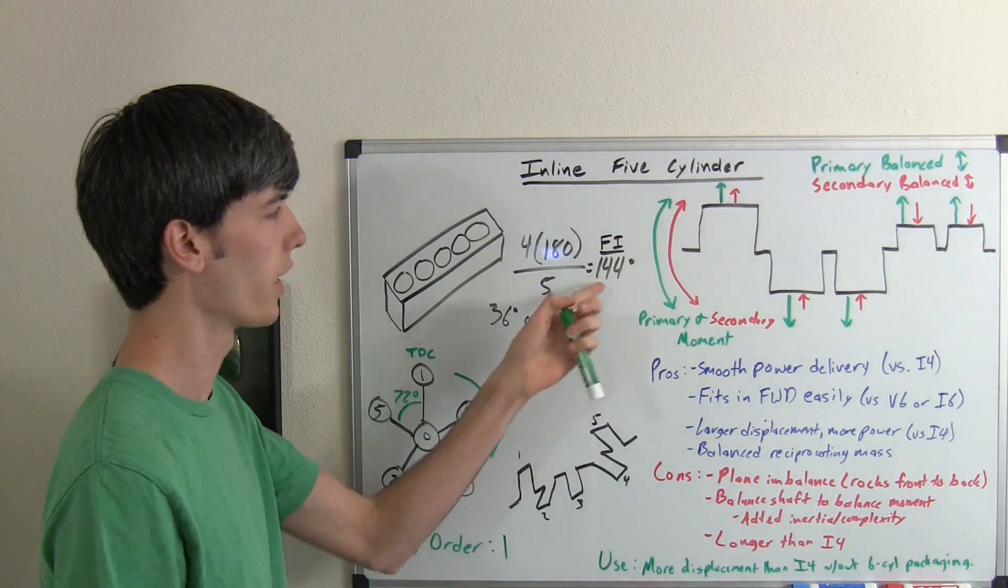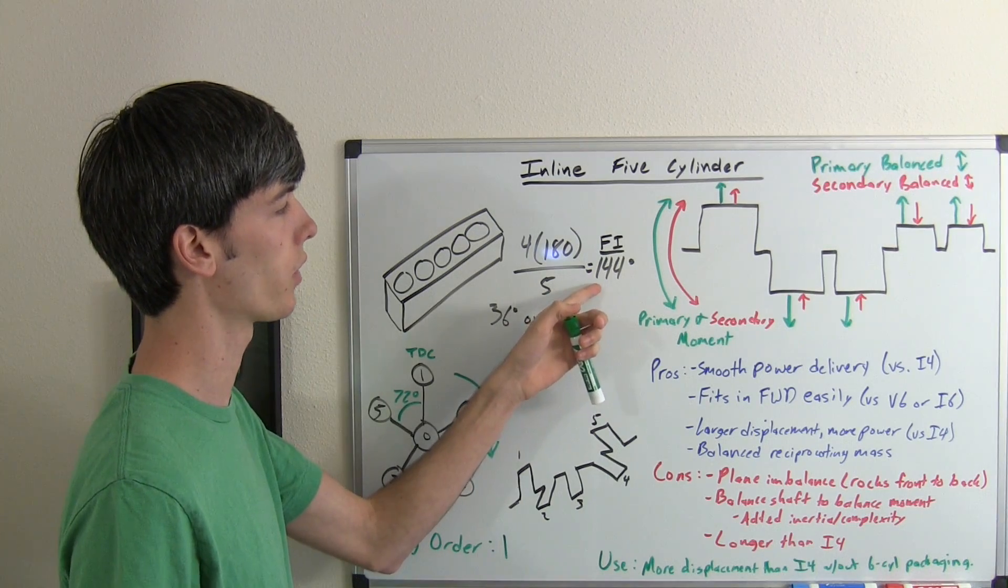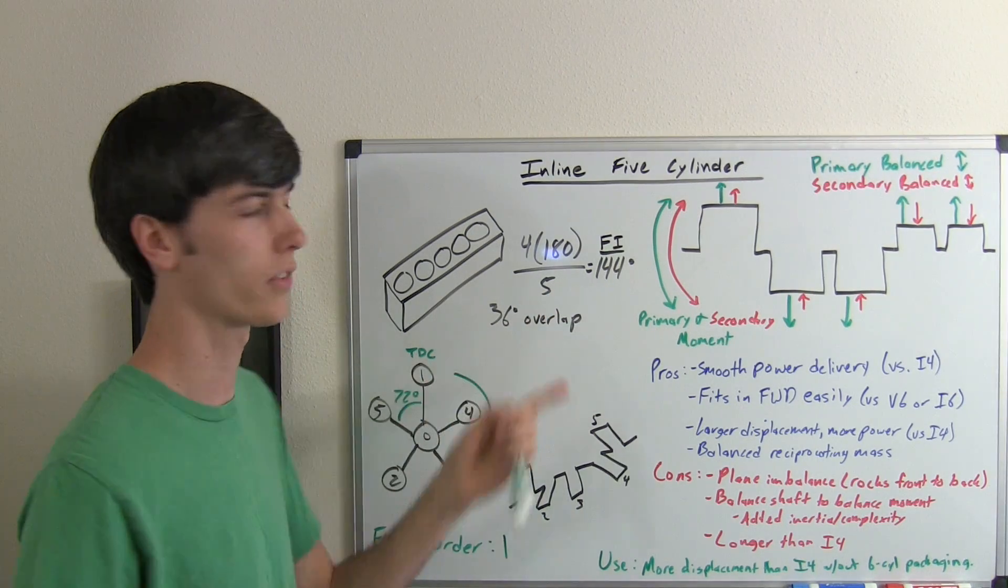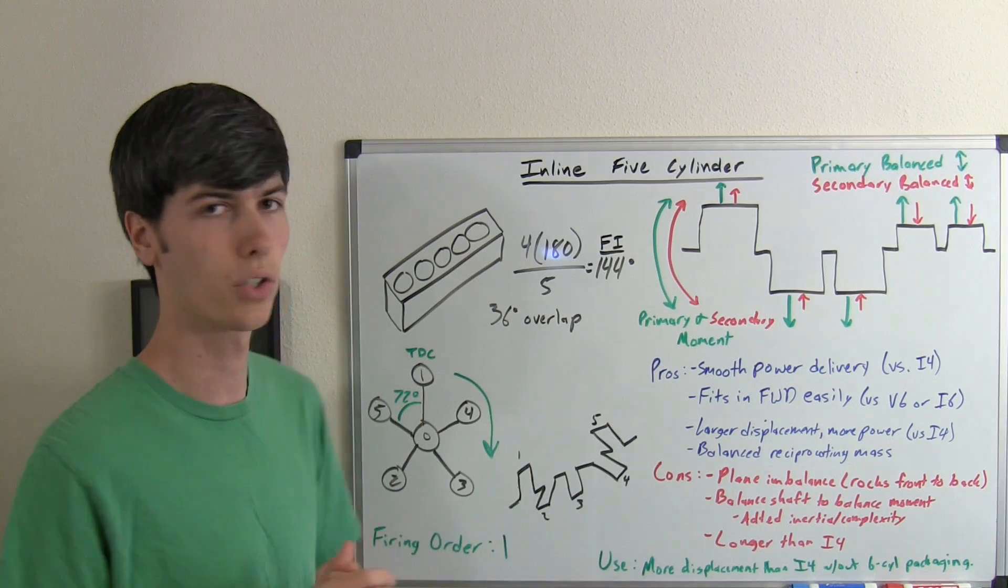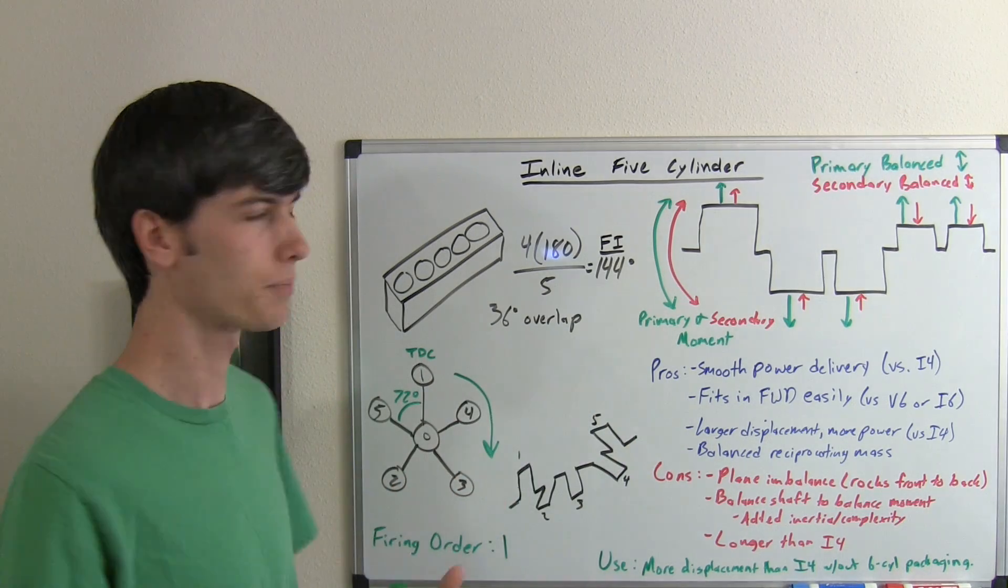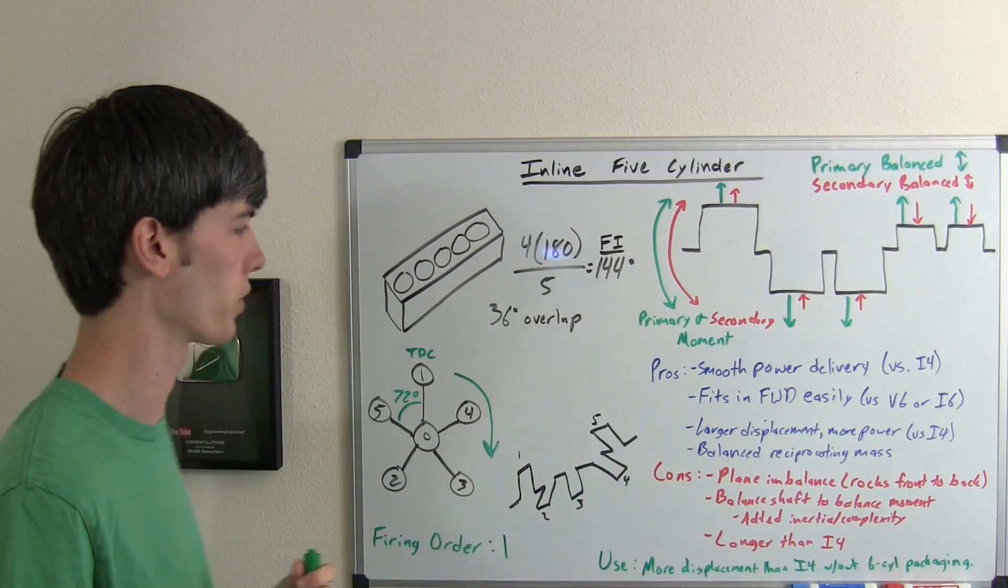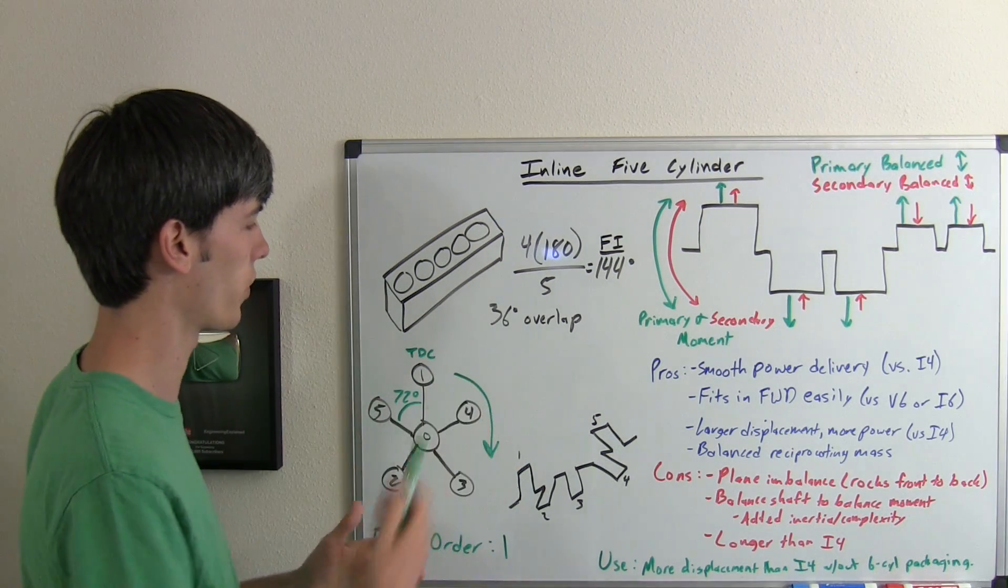The advantage of the five-cylinder engine is that because the firing interval is 144 degrees, there's 36 degrees of overlap between each power stroke. It's going to be a much smoother power delivery, and that's one of the big advantages of this engine.